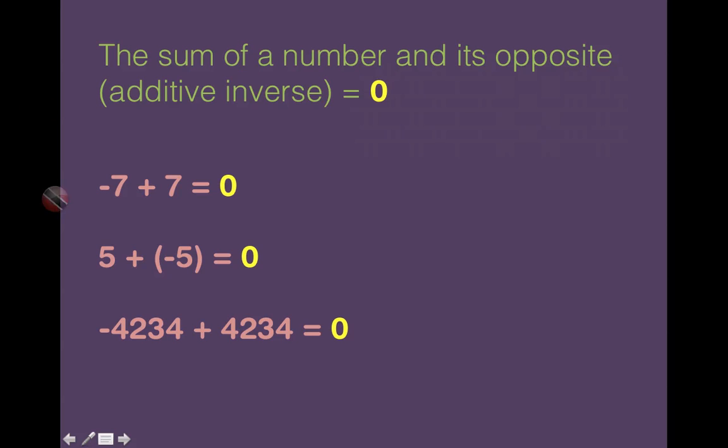So for instance, let's look at these examples here. We have negative 7 plus positive 7. Therefore we are adding a number and its opposite, and we get 0.